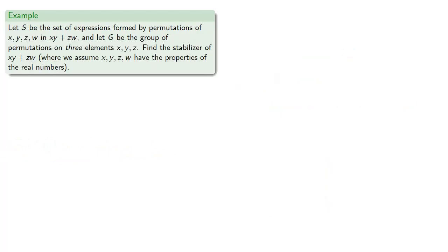Or again, if our set consists of different expressions involving 4 variables, we might try to find the stabilizer of a particular expression, about XY plus ZW. And so, we note that we're looking for the permutations that leave our expression essentially the same, where we assume that our variables still have the same properties as the real numbers.